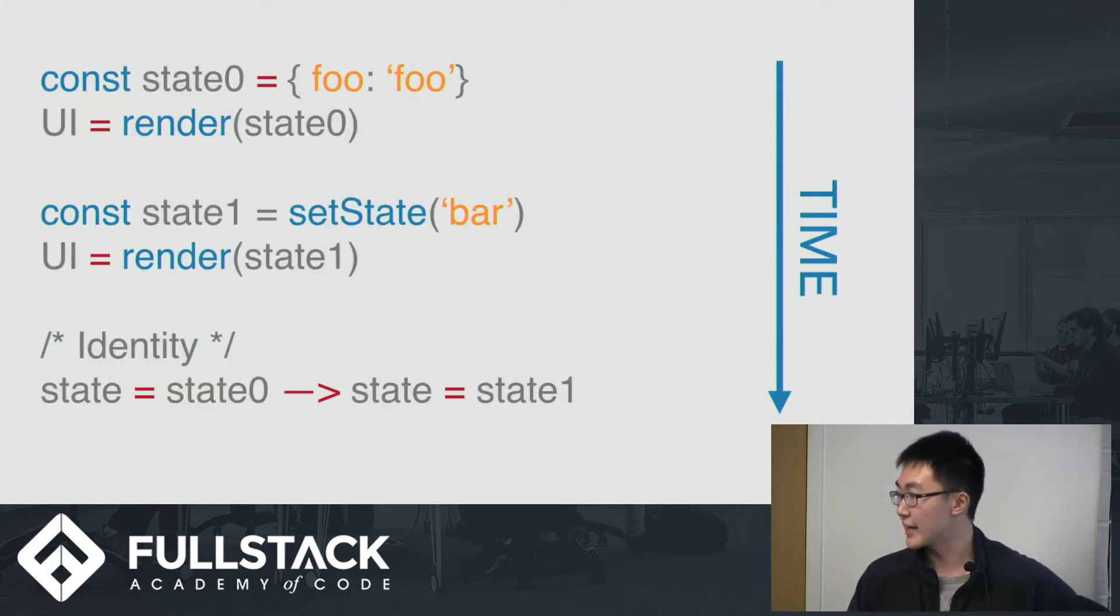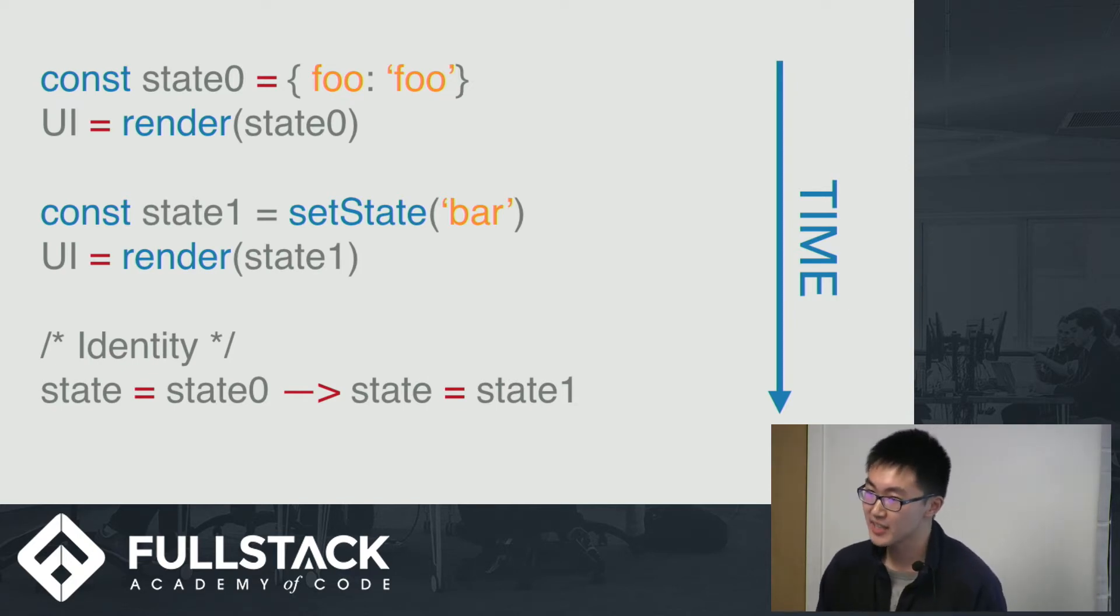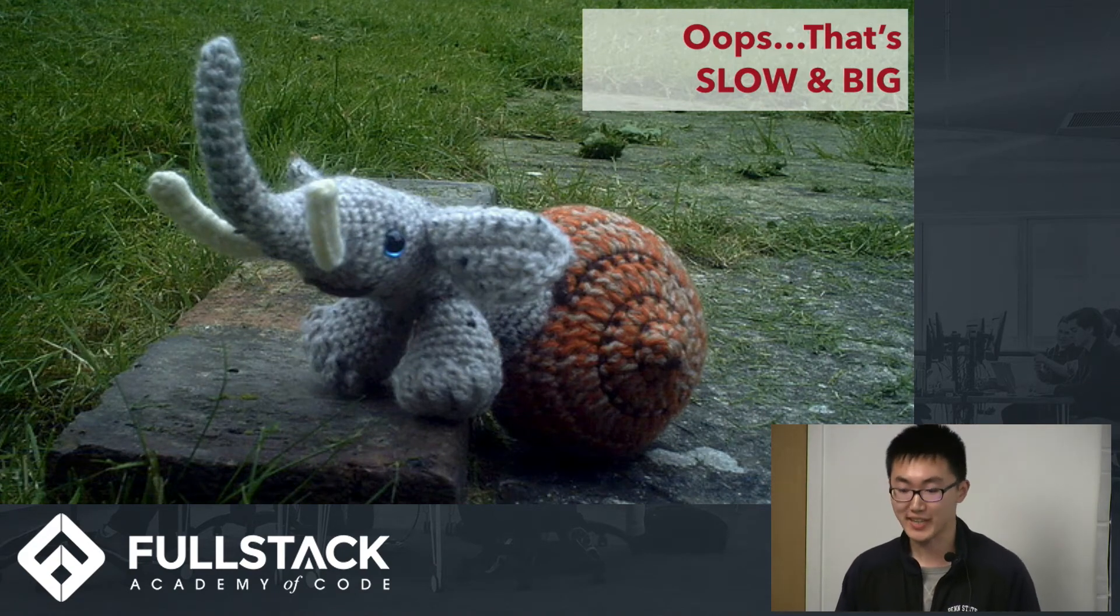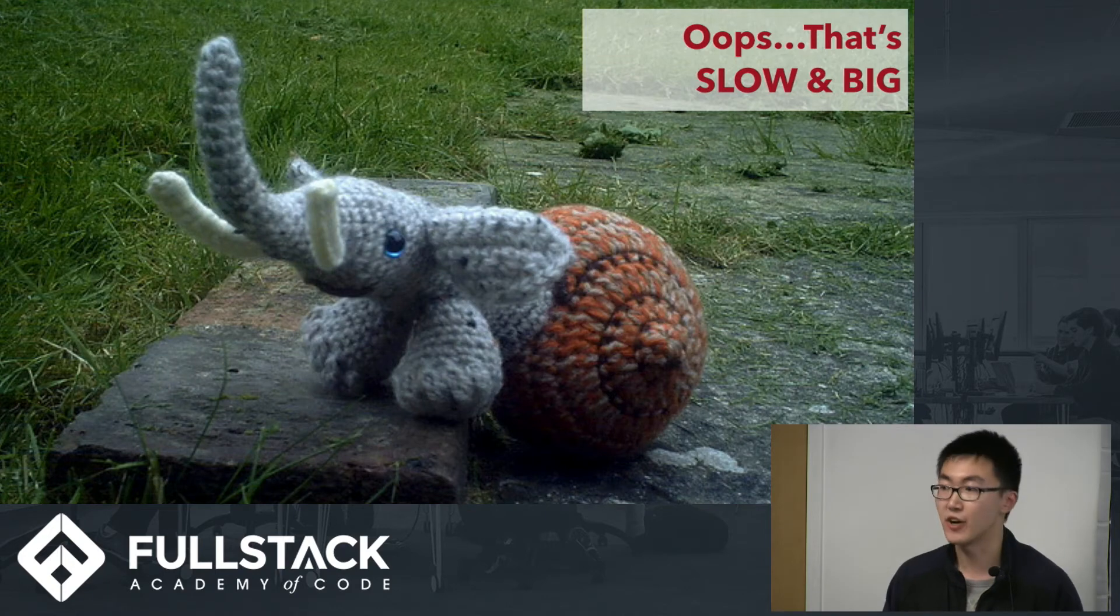But you may start to think, okay, if every time we are changing the state, we have to copy the original state altogether, doesn't that mean that we have to copy the whole thing? And wouldn't it be really slow? And wouldn't it take all space? So that's not good, because as programmers, we care about performance. How can we have immutable data structures that have native or near-native performance?